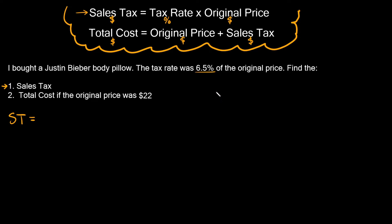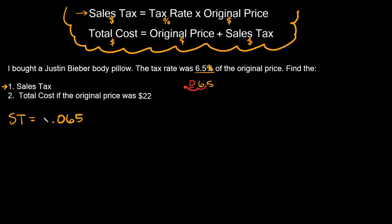To convert a percentage to a decimal, drop the percent sign — so we have 6.5. Then grab the decimal point and move it two places to the left: one, two. There's an empty place value, so we fill it with a zero. So 6.5% becomes 0.065. The more proper way of writing this is 0.065.